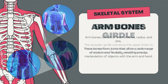The sternum has three parts: A. manubrium, B. body of sternum, and C. xiphoid process. The spine provides structural support for the entire body, allowing us to stand upright. The opening in a vertebra, known as the vertebral foramen, protects the spinal cord and nerves.